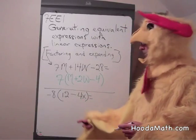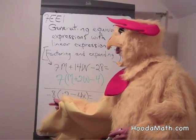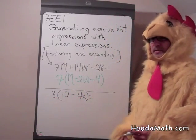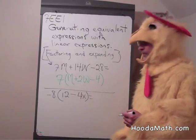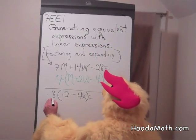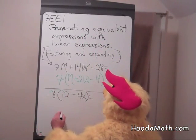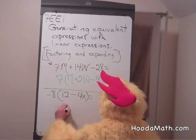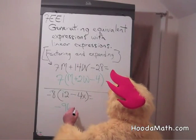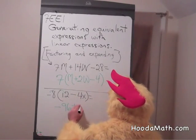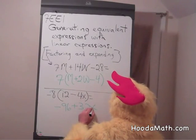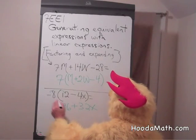Now let's try it down here. We have two factors: negative 8 times the quantity 12 minus 4x. What we have to do is distribute multiplication over these two terms. Negative 8 times 12 is negative 96. Negative 8 times negative 4x is positive 32x. The common factor is negative 8.